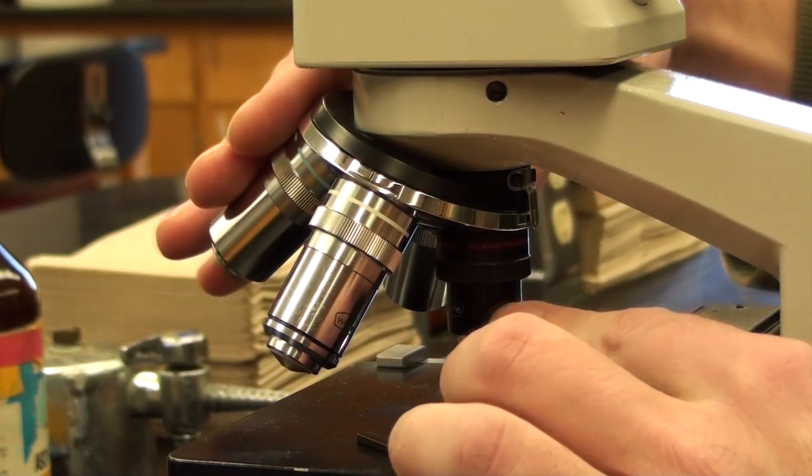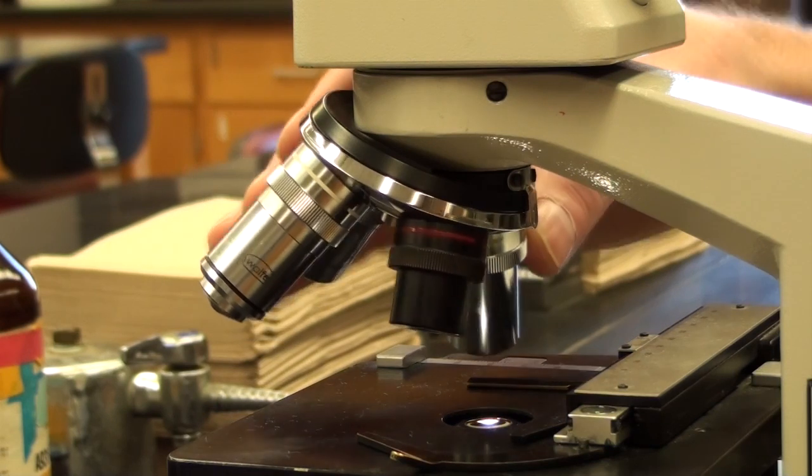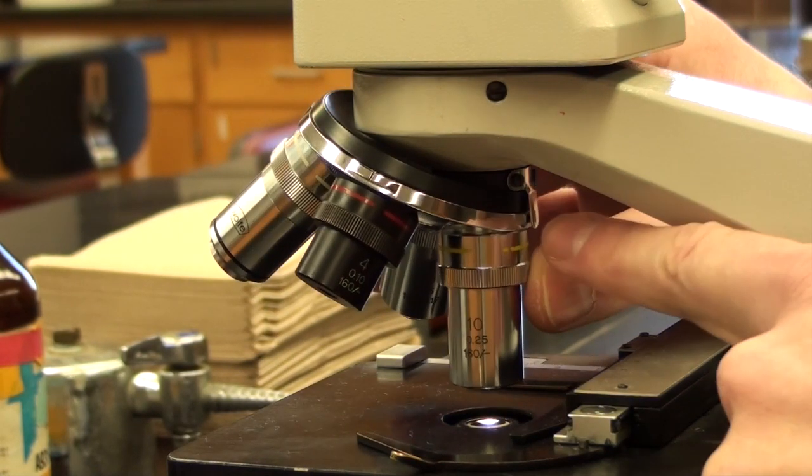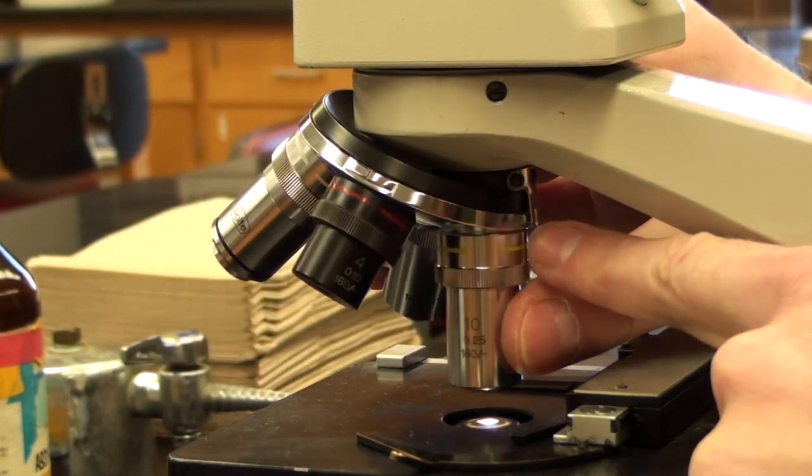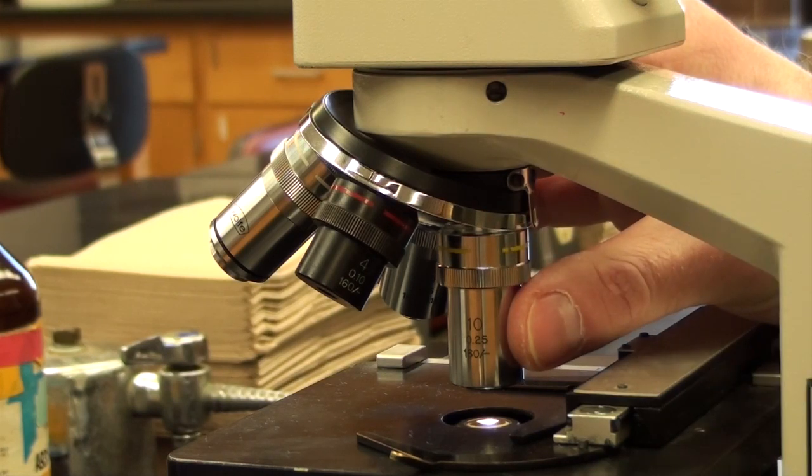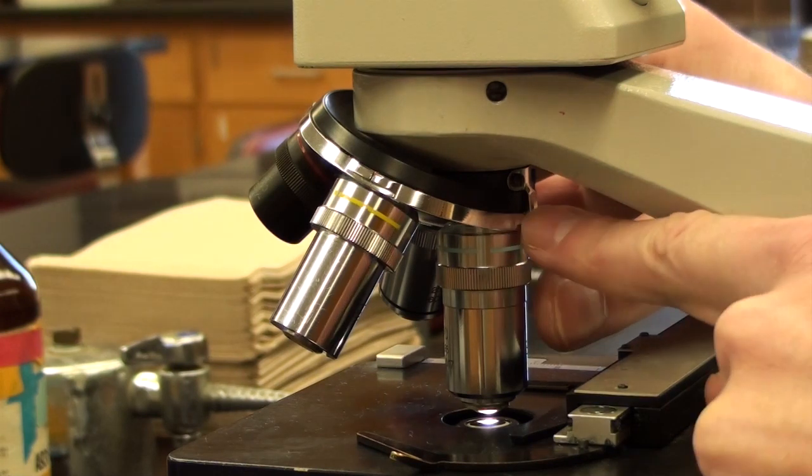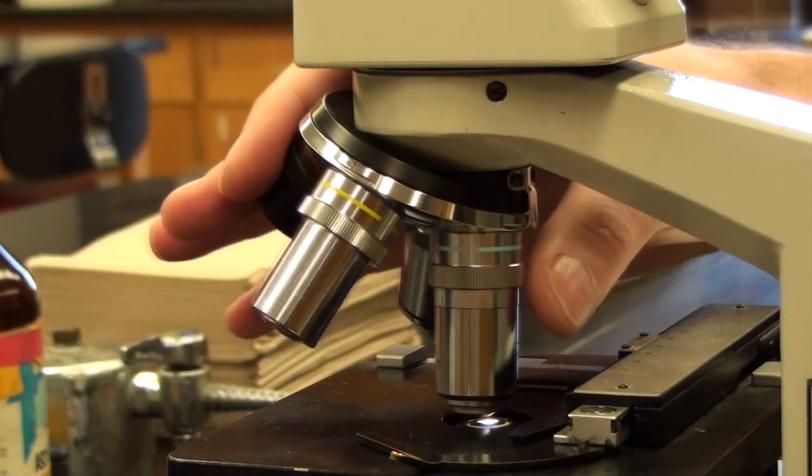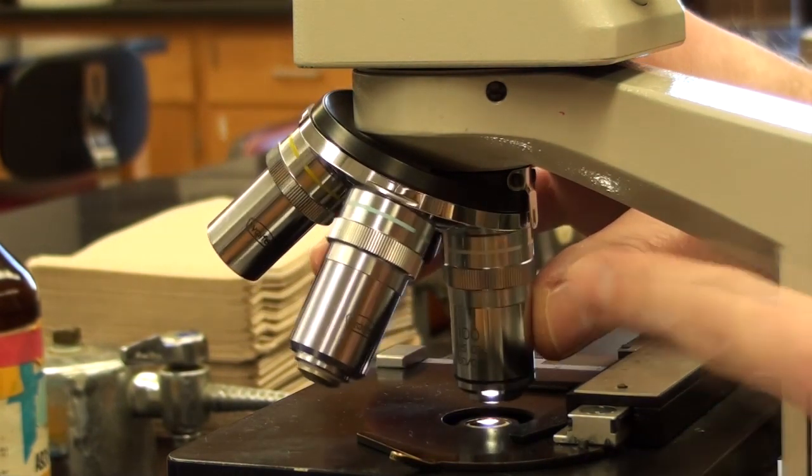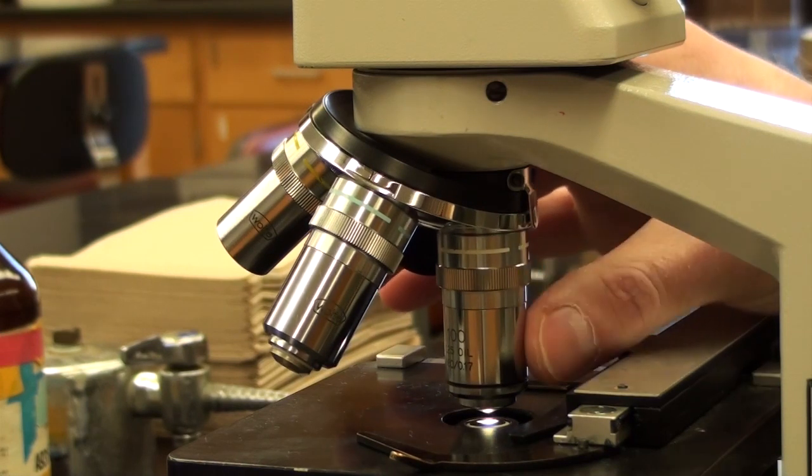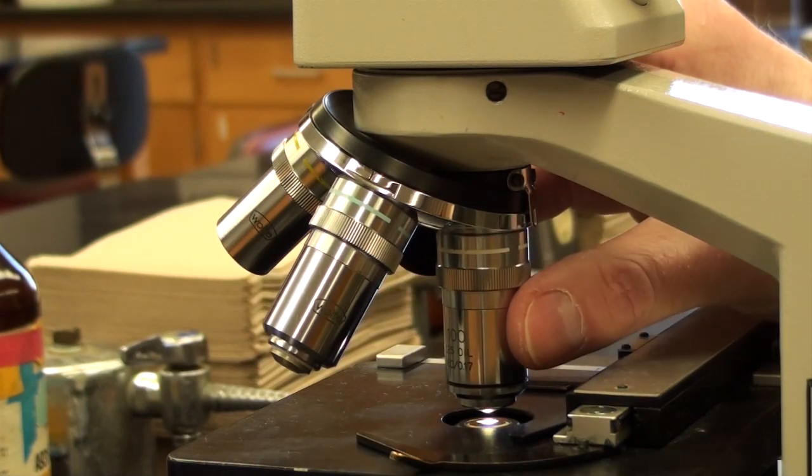Here are our objective lenses. This is 4 power. We'll rotate it in a clockwise direction. Notice right here it should click in. This is a 10 power lens. Then we'll have a 40 power lens. And then last but not least is what we call an oil immersion lens, and this is 100 times power.